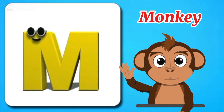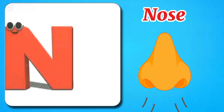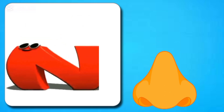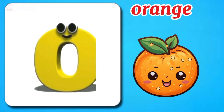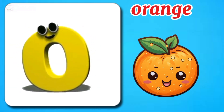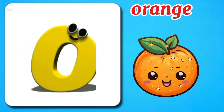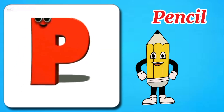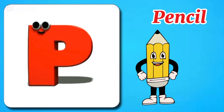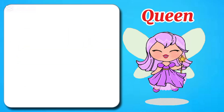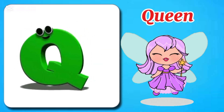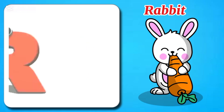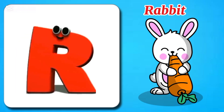M is for monkey. N is for nose, nose, nose. O is for orange, o-o-orange. P is for pencil, pencil. Q is for queen, queen, queen.